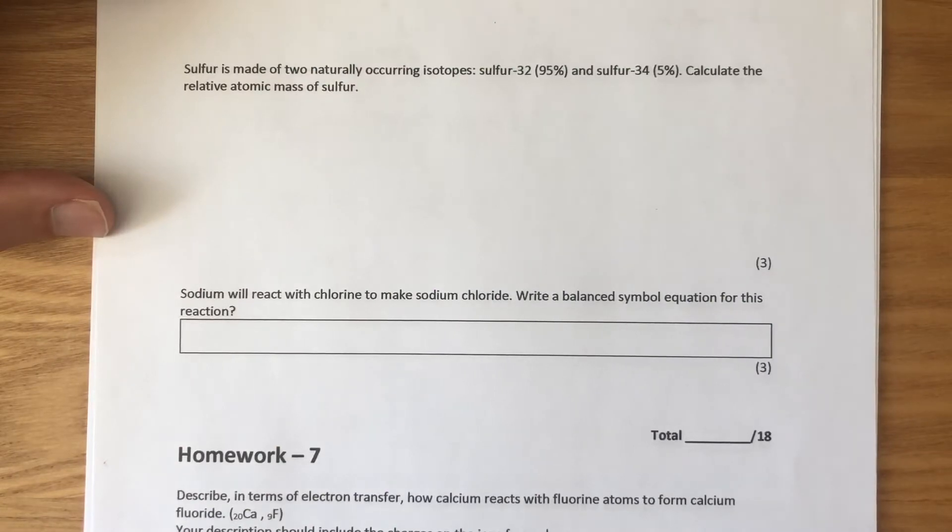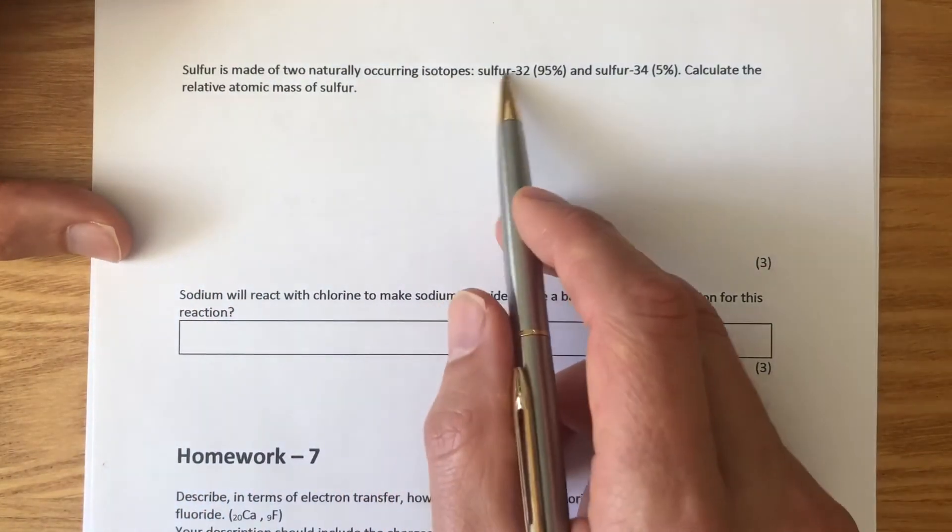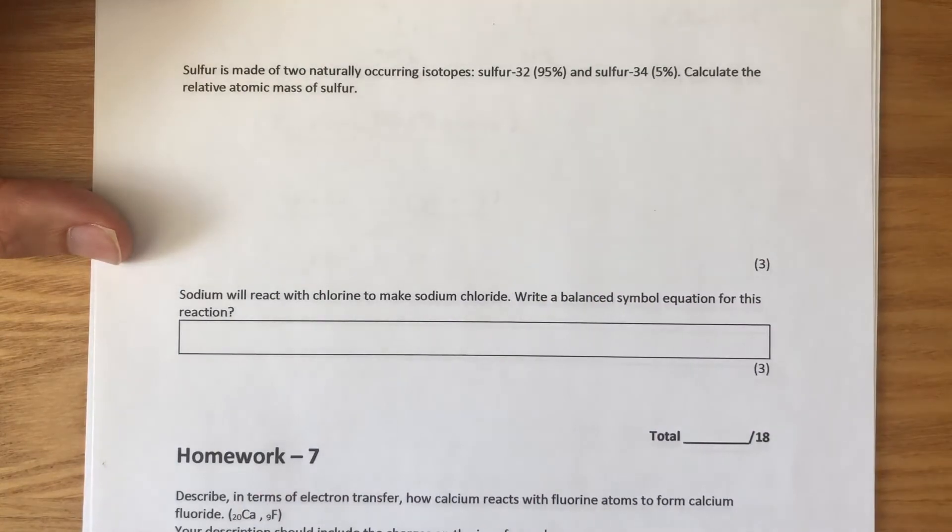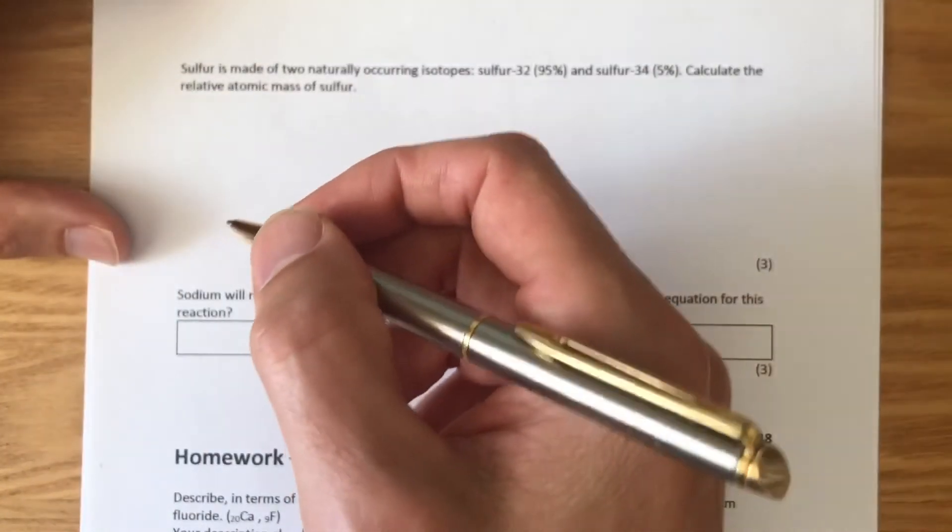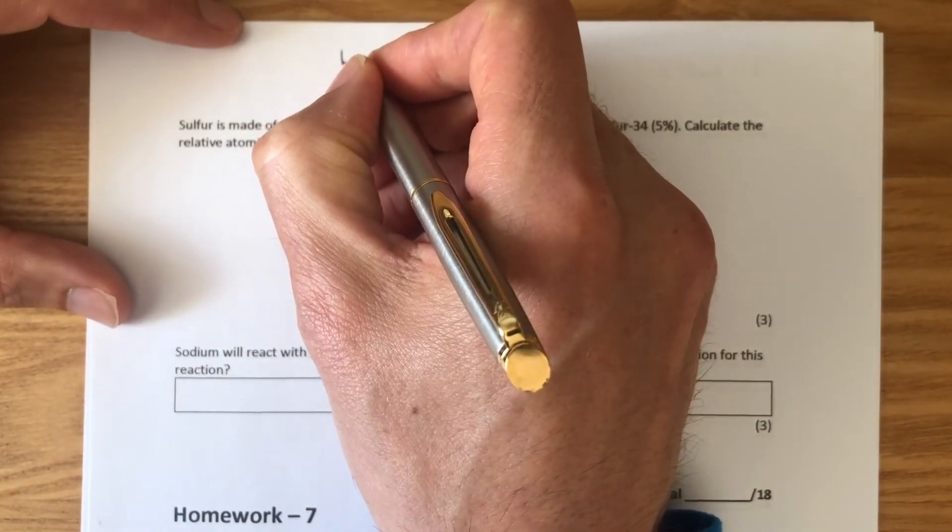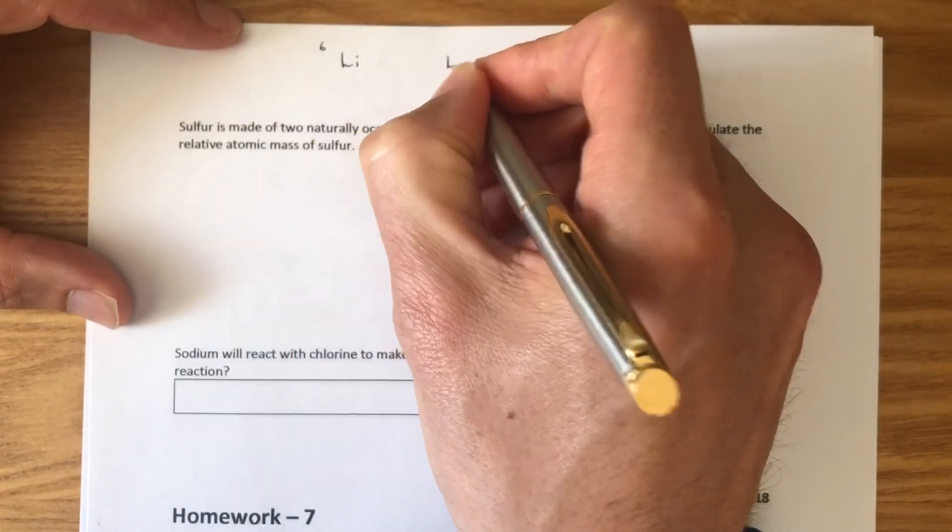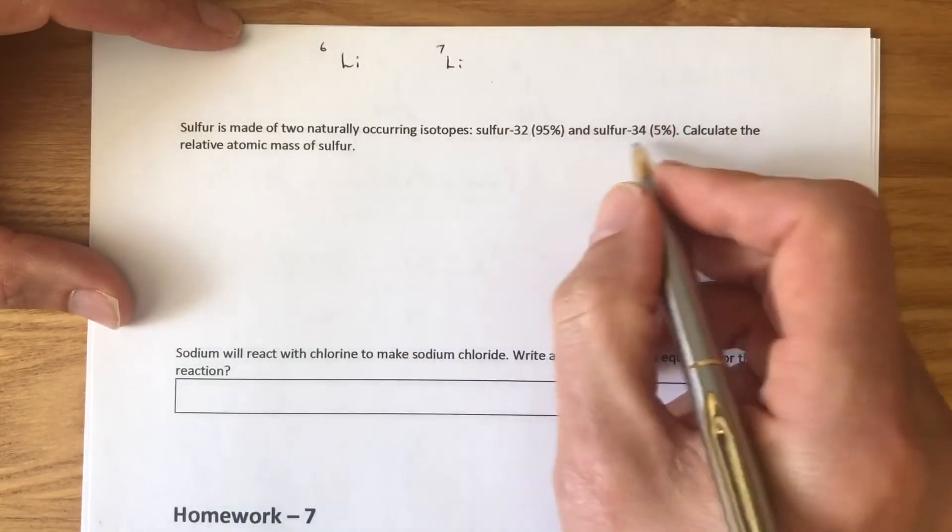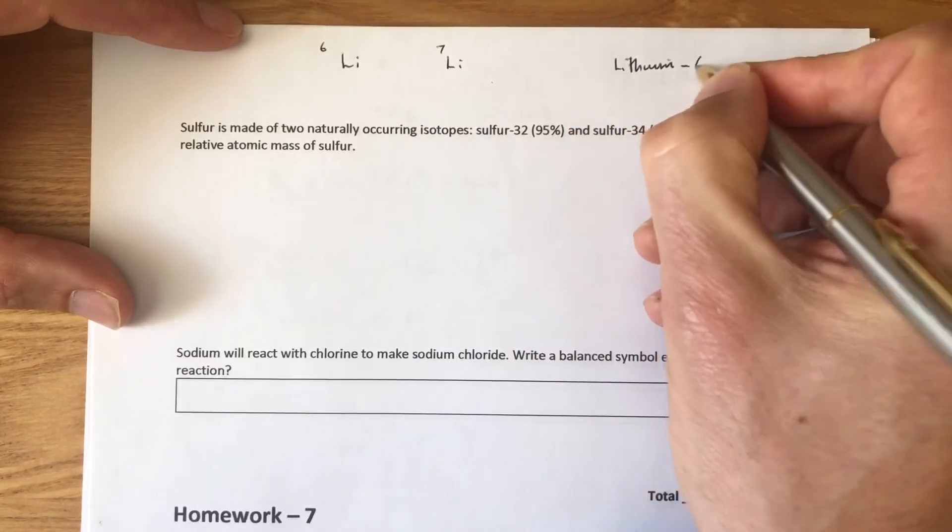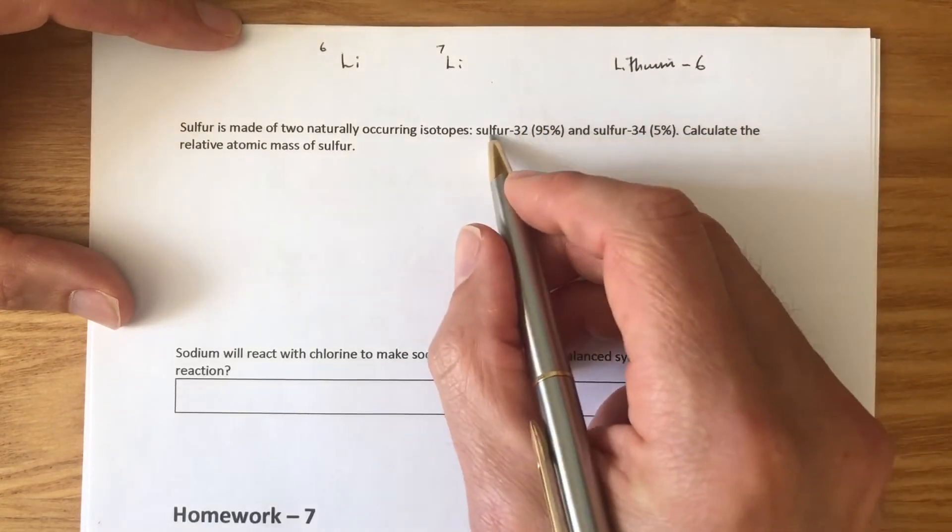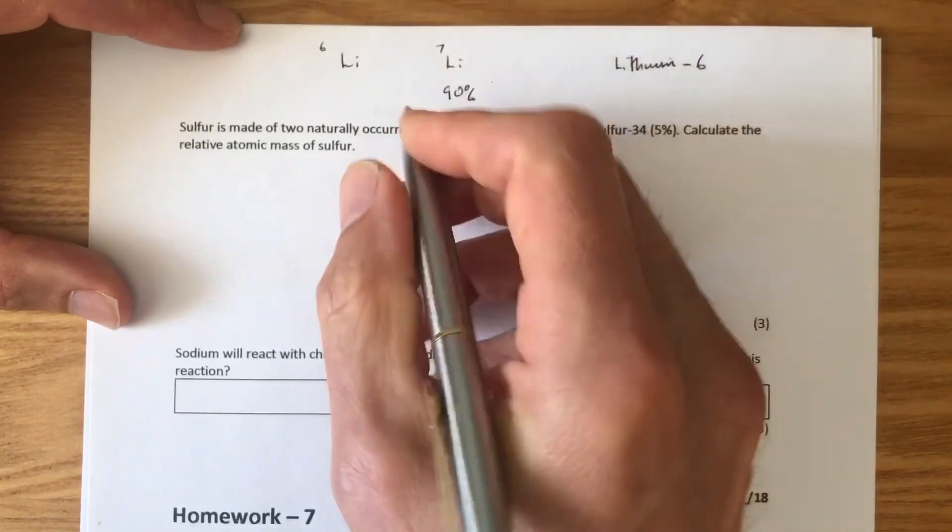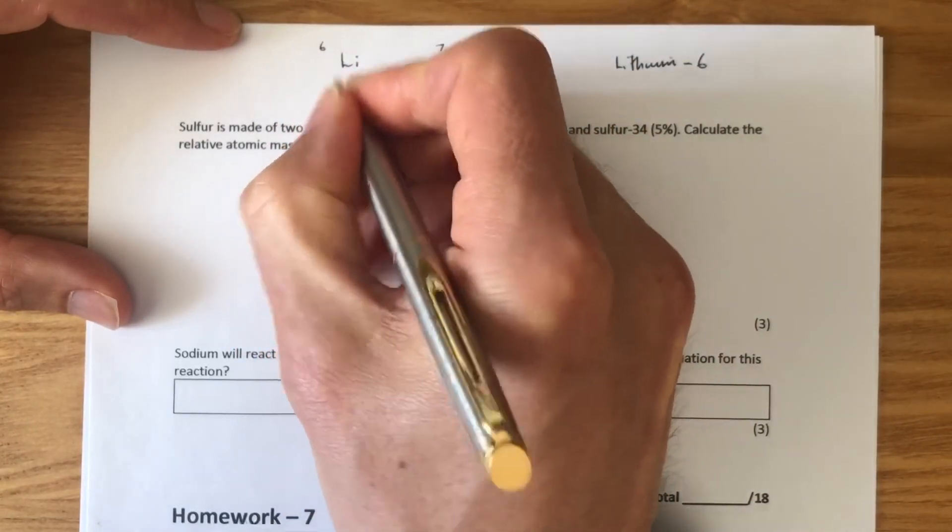So, the next question here is an atomic mass question. It's about sulfur. Sulfur is made of two naturally occurring isotopes. Sulfur-32 and sulfur-34. 95% is sulfur-32 and 5% is sulfur-34. Well, I'm not going to do this question. I'm going to do a very similar one about lithium. Lithium is made of two different naturally occurring isotopes. There's lithium-6 and lithium-7. This is made of 90% lithium-7 and 10% lithium-6.